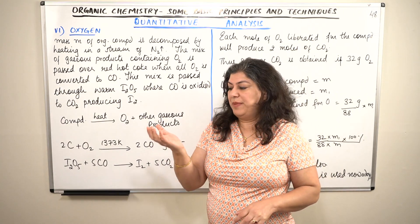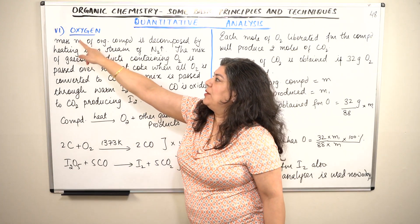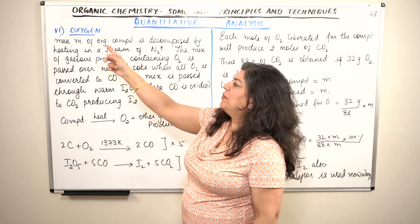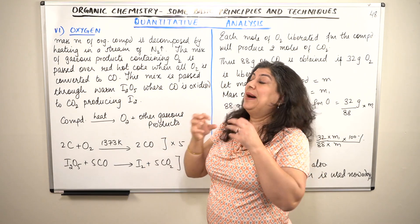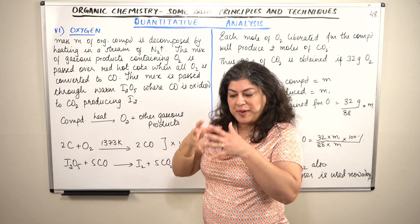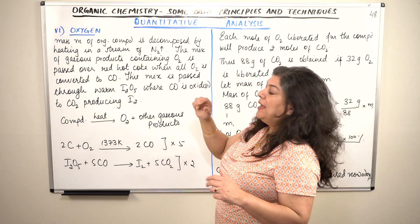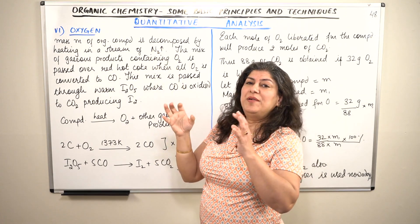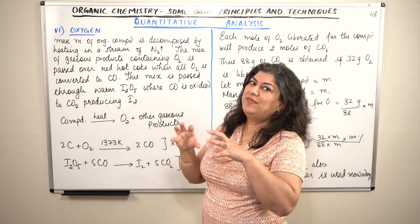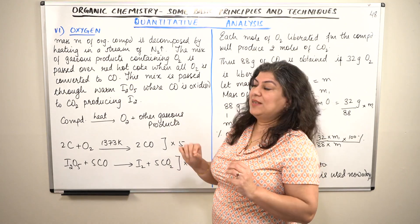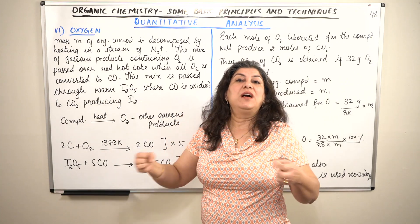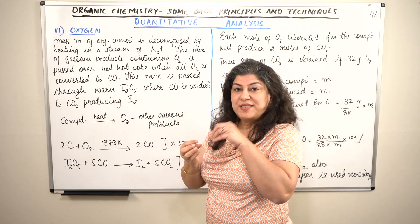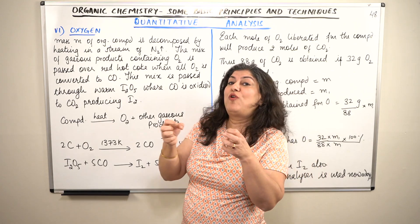In the direct method for oxygen, we take a measured mass m of the organic compound — the same approach we used for all other elements. We decompose the compound by heating it in a stream of nitrogen gas. Since nitrogen is inert and does not react directly, the compound decomposes in a very inert atmosphere, producing a mixture of gaseous products that would contain oxygen.